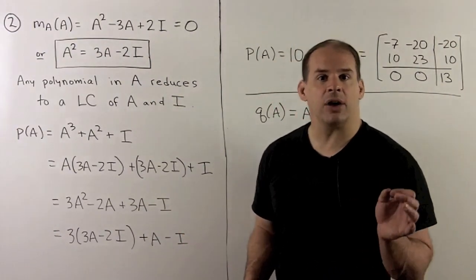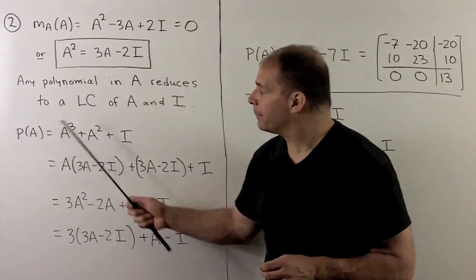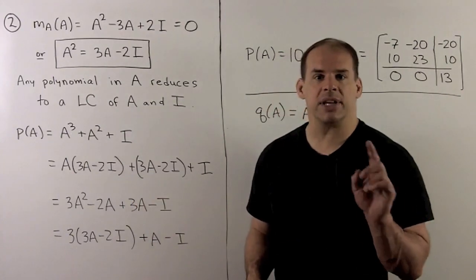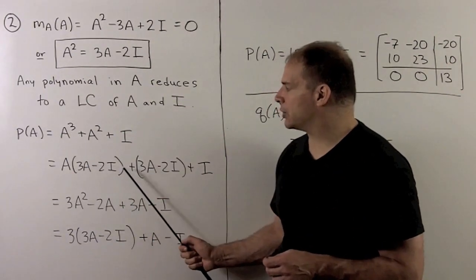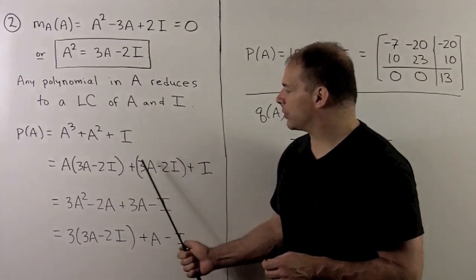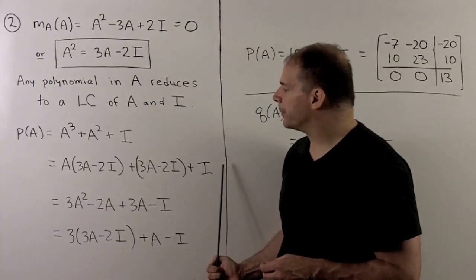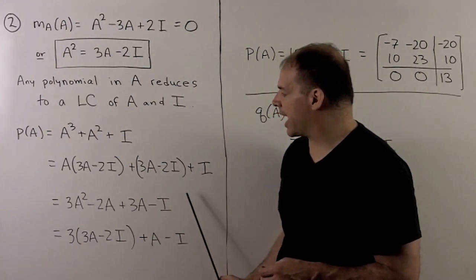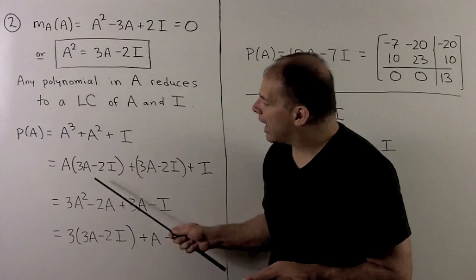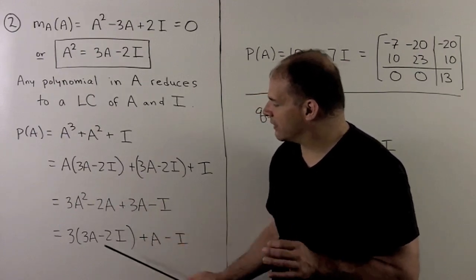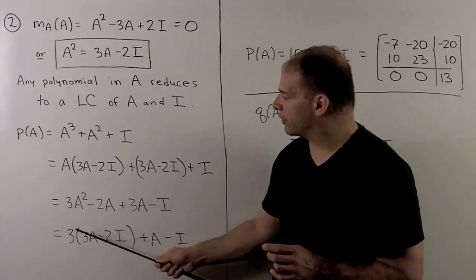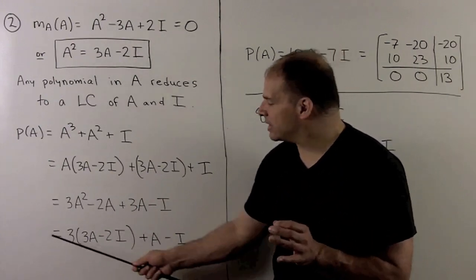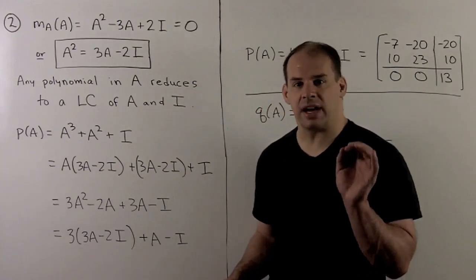For instance, if I evaluate P at A, we have A cubed plus A squared plus I. A cubed equals A times A squared, so I'll have A times 3A minus 2I. The A squared becomes 3A minus 2I, I goes to itself. This reduces to 3A squared minus 2A plus 3A minus I. I could substitute out this A squared, giving us 3 times 3A minus 2I plus A minus I. This simplifies to 10 times A minus 7I.